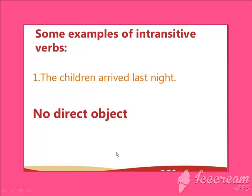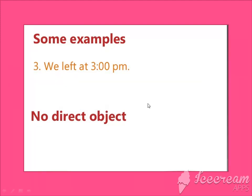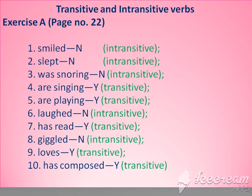Some more examples of intransitive verbs: 'The children arrived last night' — no direct object. 'The little boy cried for 20 minutes' — no direct object. 'We left at 3 p.m.' — again, no direct object.